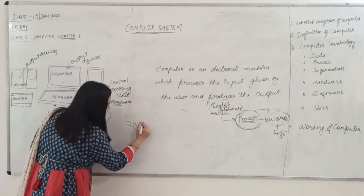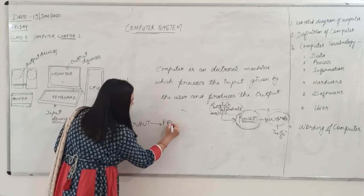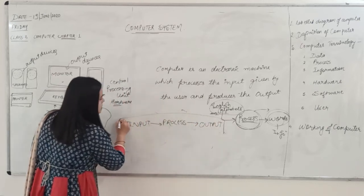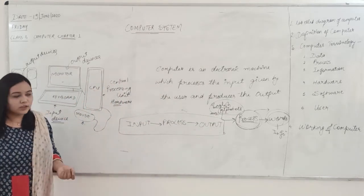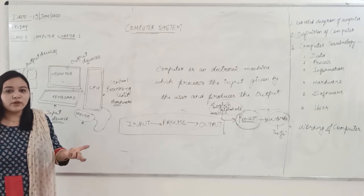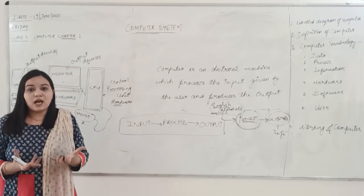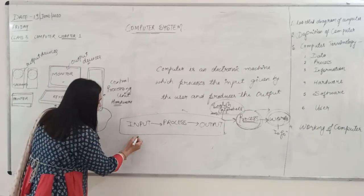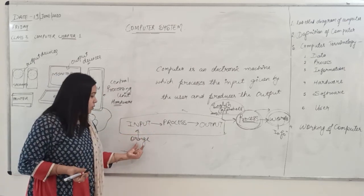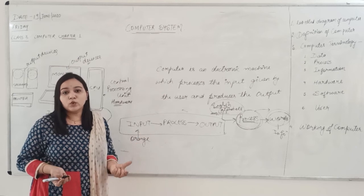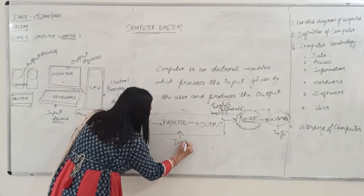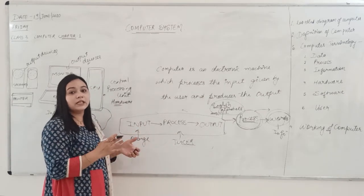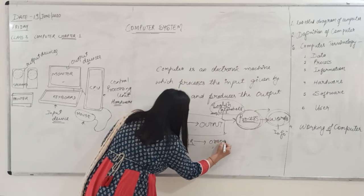A computer takes input, then it processes that input, and then it gives you the desired output. For example, you want to drink orange juice. The orange juice is the output you want. You know orange juice is prepared from oranges, so oranges are the input. How do you prepare juice from oranges? You need a fruit juicer — the juicer carries out the process. After the oranges are given as input into the juicer, it processes them and creates orange juice, which is the ultimate output.